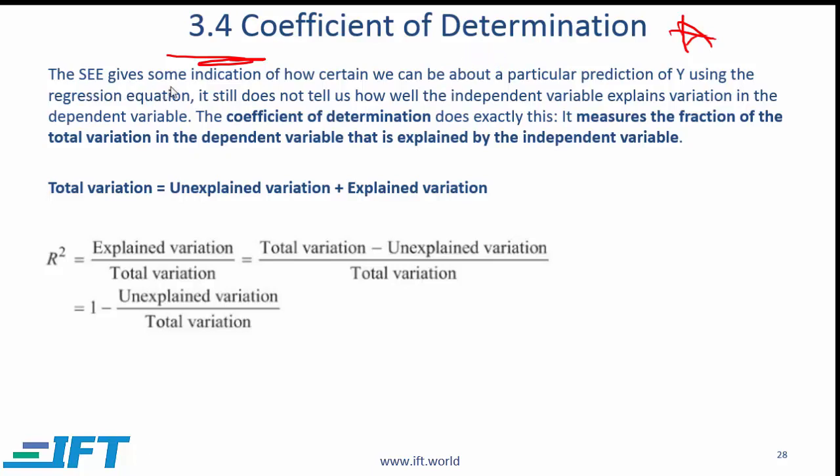The SEE gives some indication of how certain we can be about a particular prediction of y using the regression equation, but SEE still does not tell us how well the independent variable explains variation in the dependent variable. So it tells us something but it doesn't tell us quite enough. So we need something more. That something more is the coefficient of determination.